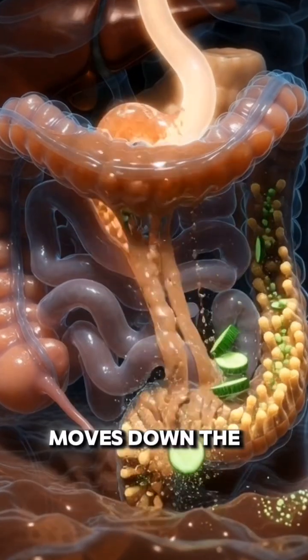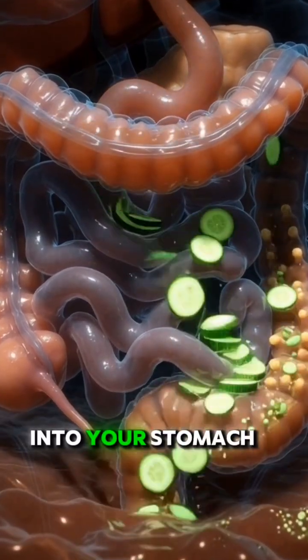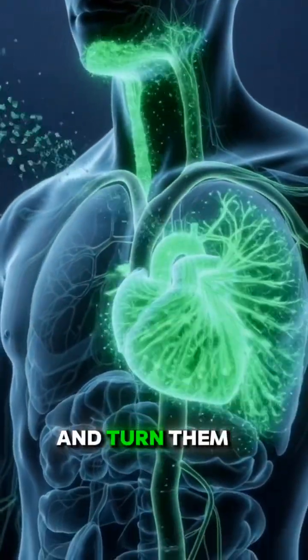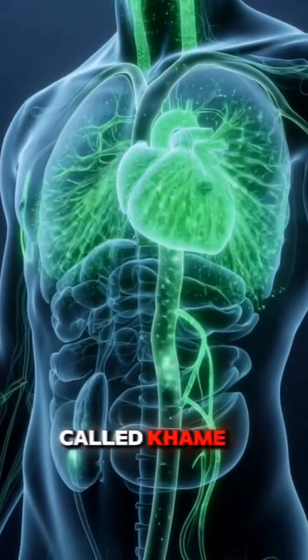The cucumber then moves down the esophagus into your stomach. Here, strong stomach acids soften its crunchy fibers and turn them into a light, watery mixture called chyme.